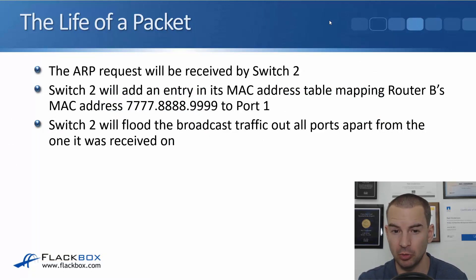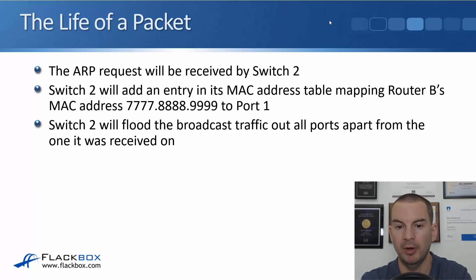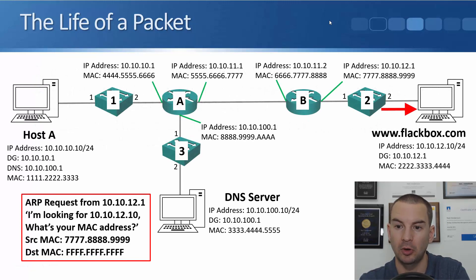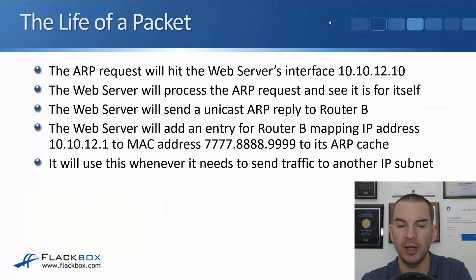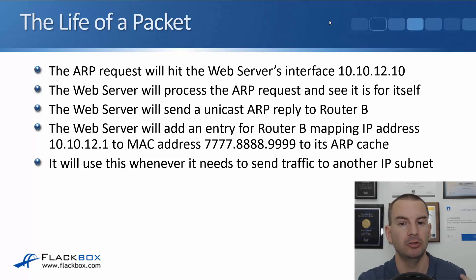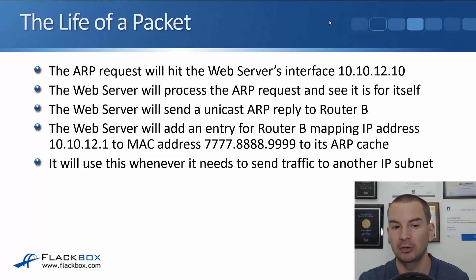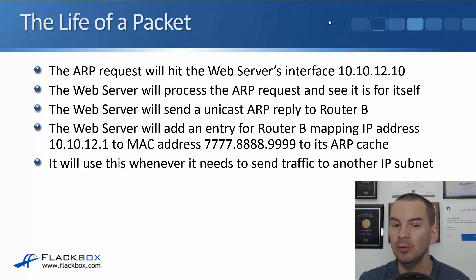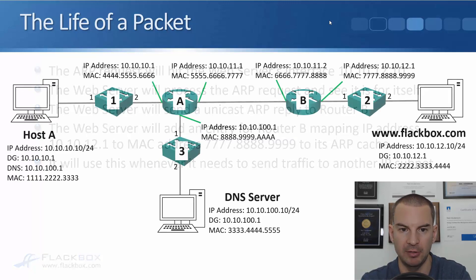The ARP request will be received by Switch 2. Switch 2 will add an entry in its MAC address table mapping Router B's MAC address of 7.8.9 to port 1, and will flood the ARP request broadcast out all ports except the one it was received on — out port 2. The ARP request hits the web server's interface at 10.10.12.10. The web server will send a unicast ARP reply back to Router B, and add an entry mapping IP 10.10.12.1 to MAC 7.8.9 to its ARP cache — that's its default gateway.